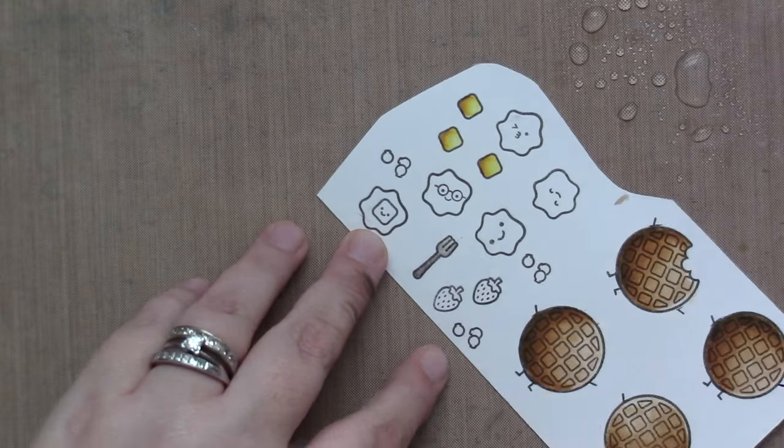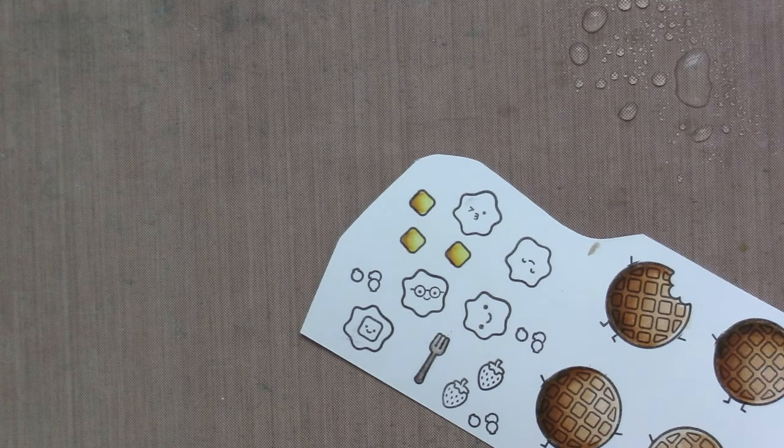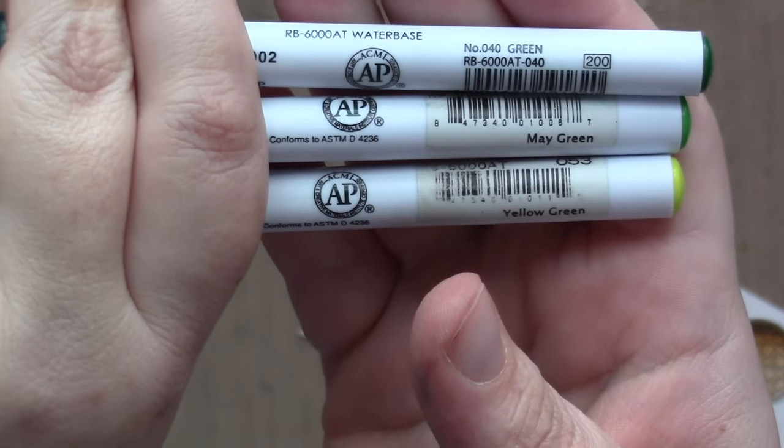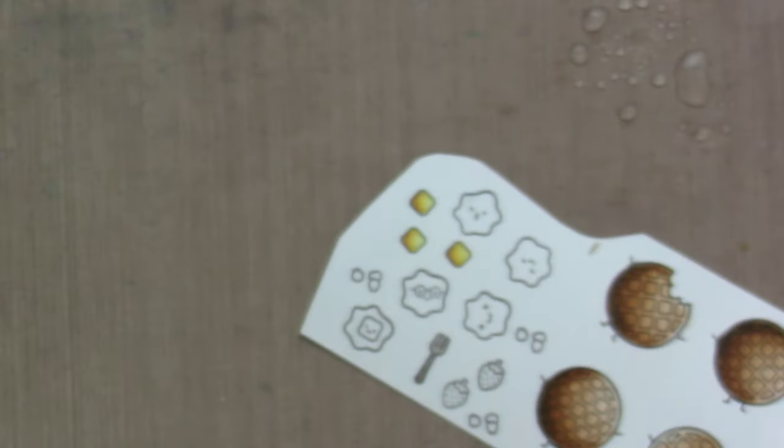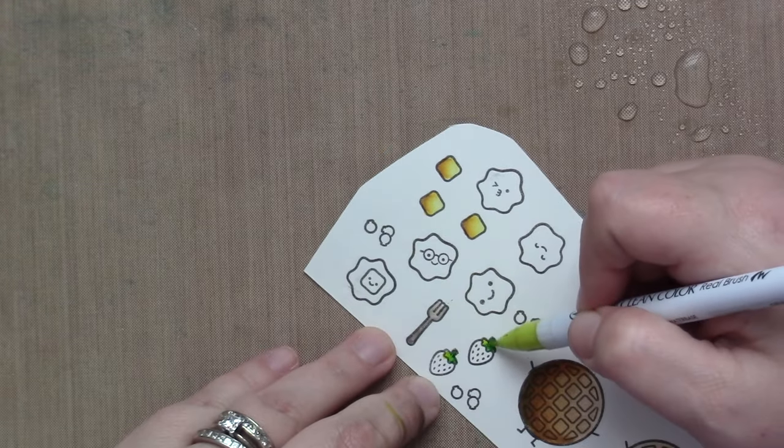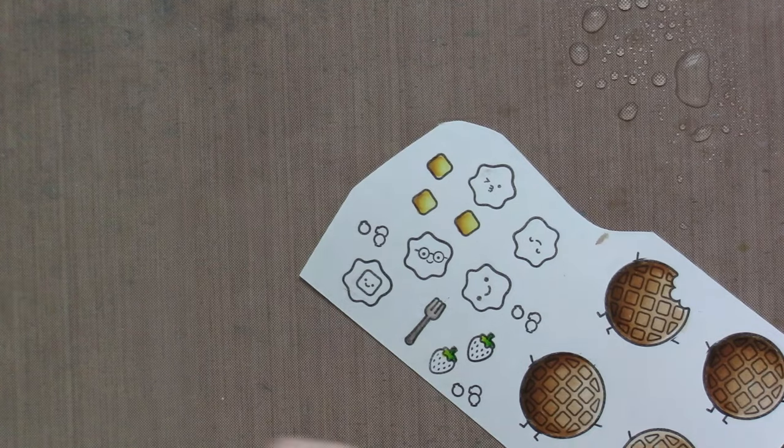Not a ton of coloring needed. That was platinum brown for the fork, no other color, just the platinum brown. Next up is green, may green, and yellow green for that tiny strawberry top.